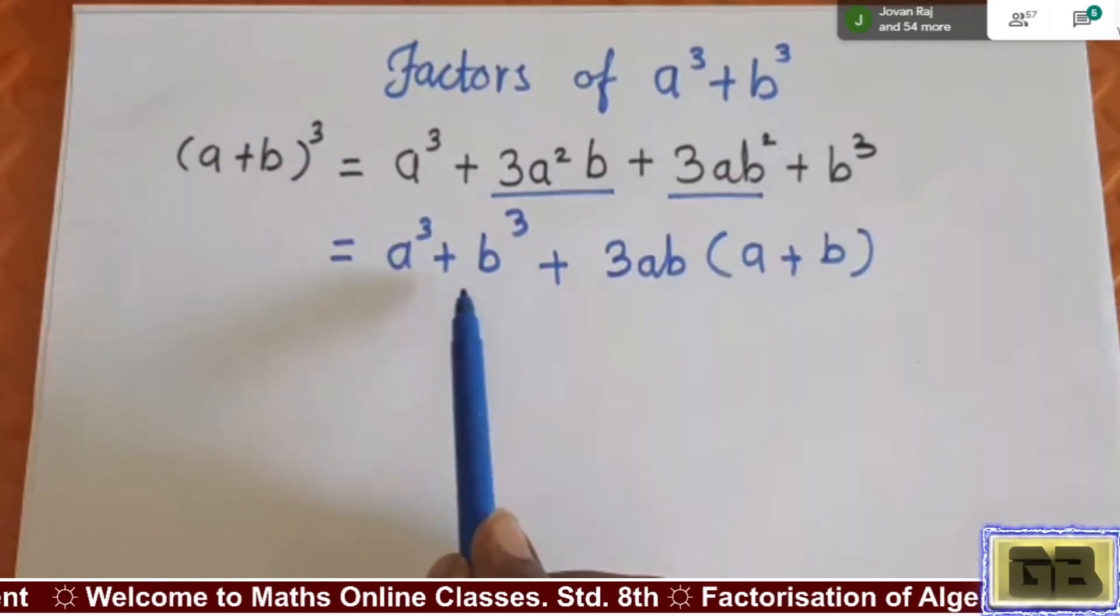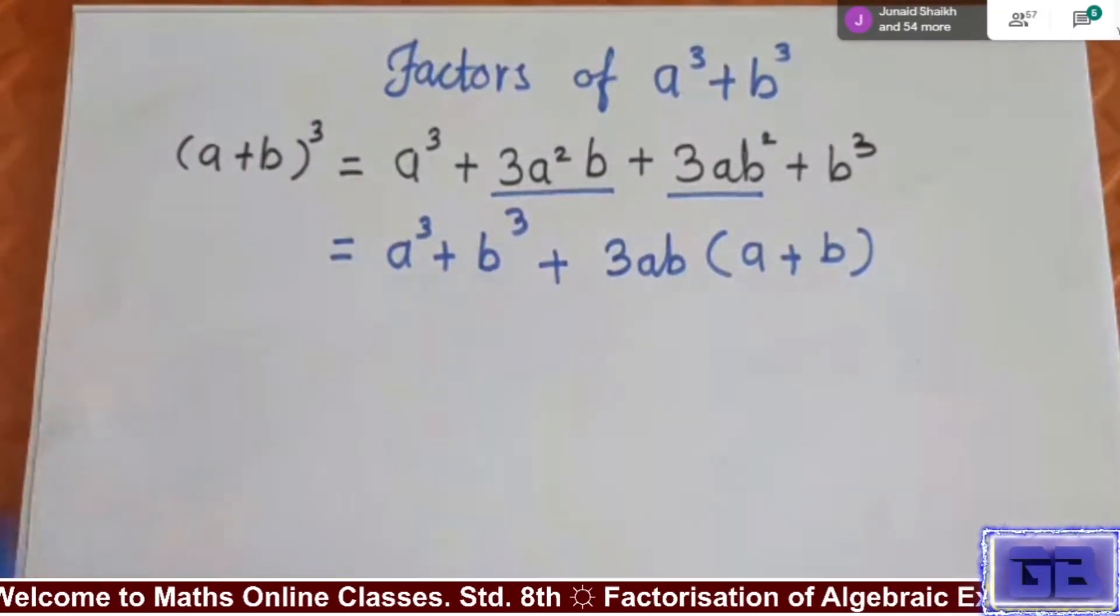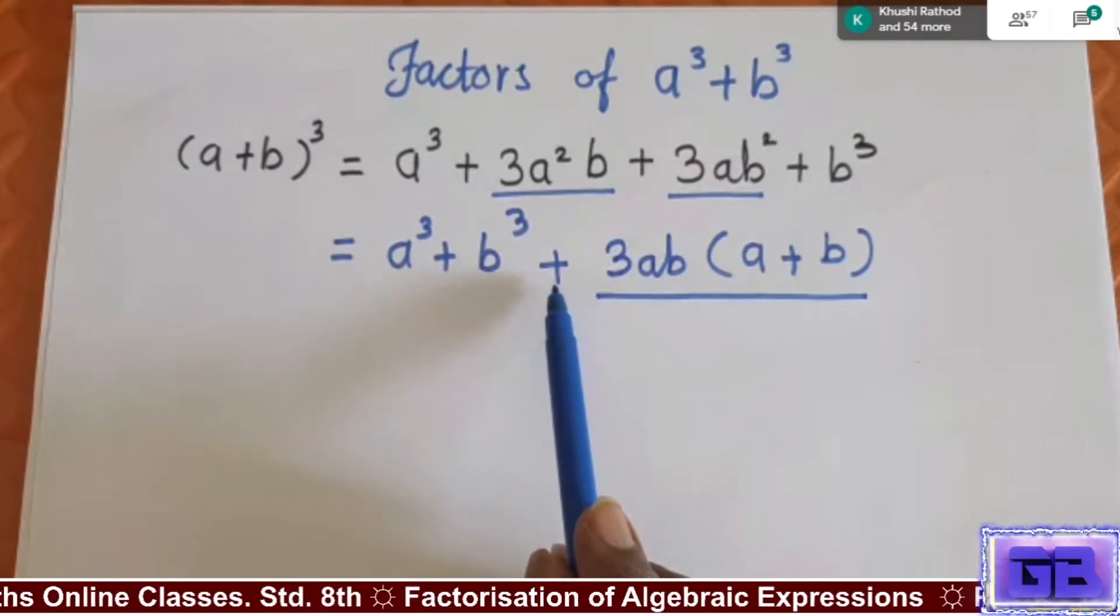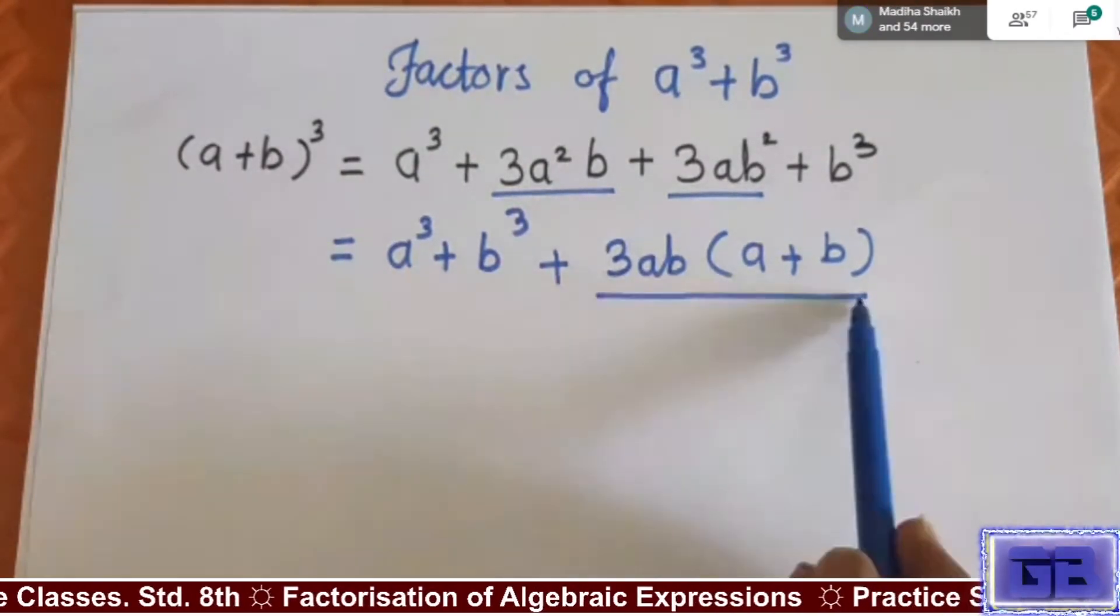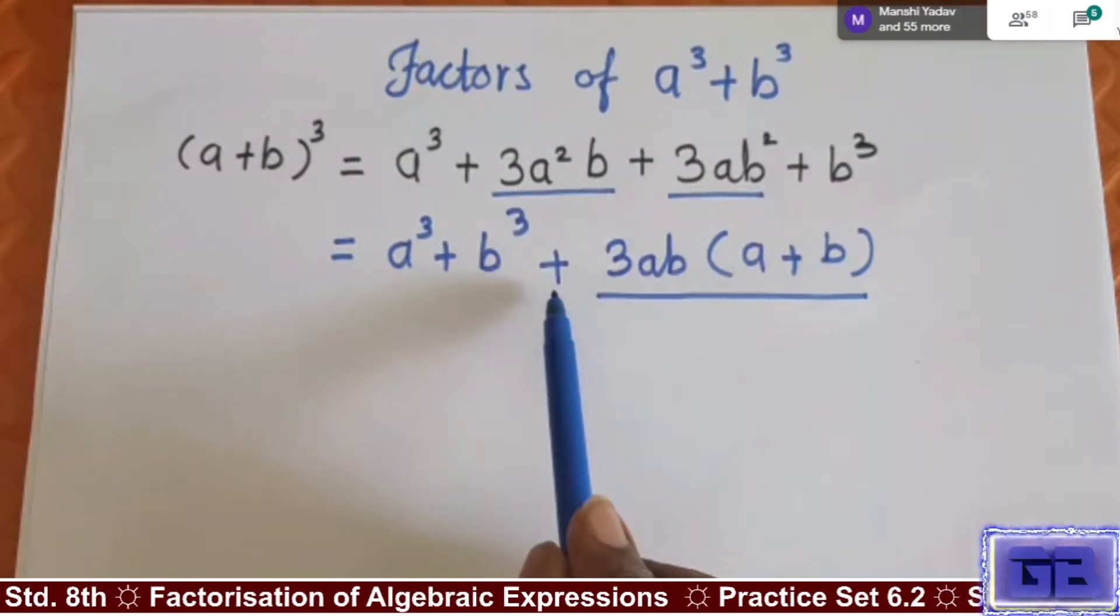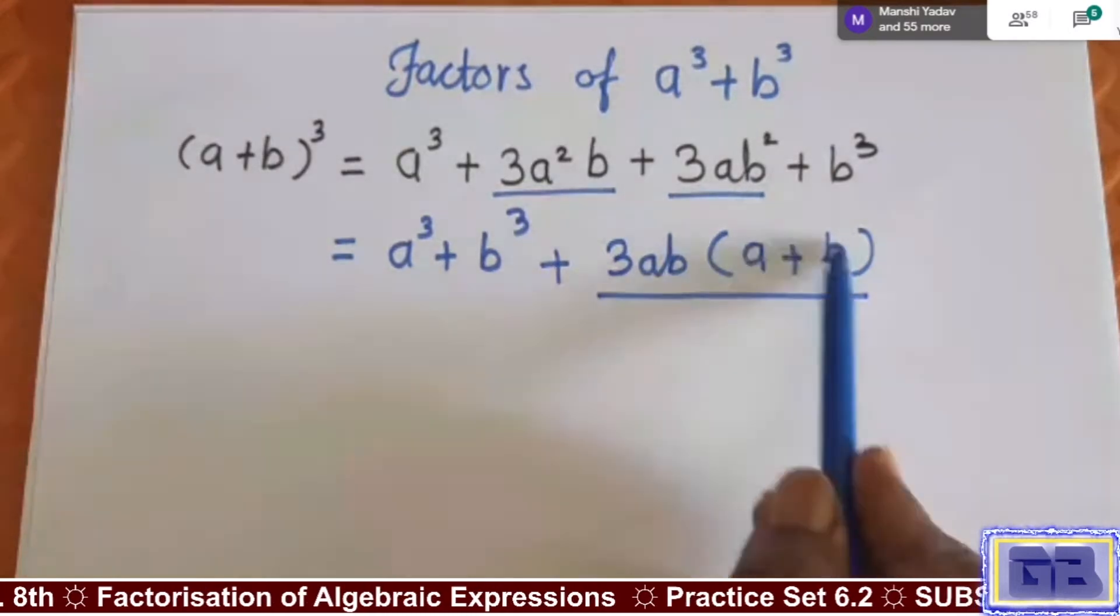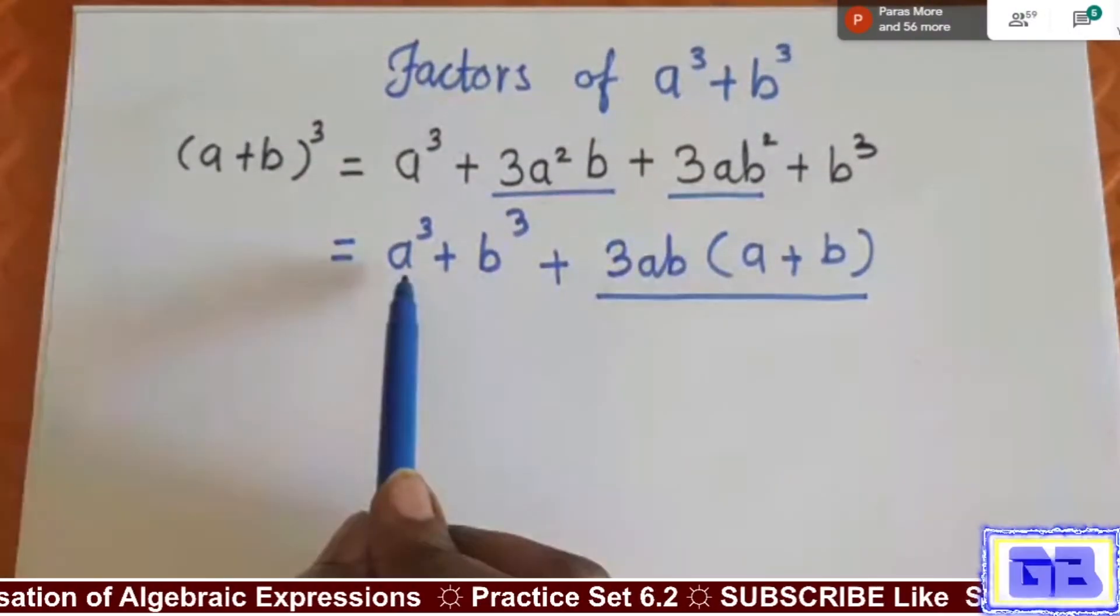So this term contains what sign here? Plus or positive sign is there. When we shift all together to the other side, its sign changes. If it is positive, this whole term becomes negative if we are shifting to other side. So this a³ + b³ I'm taking to the left side.